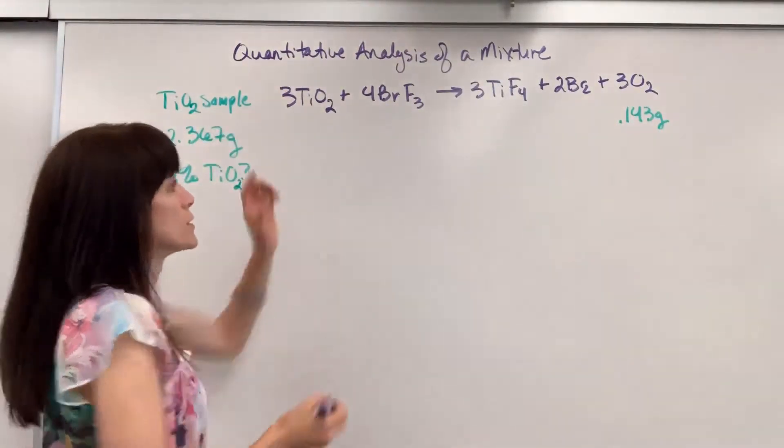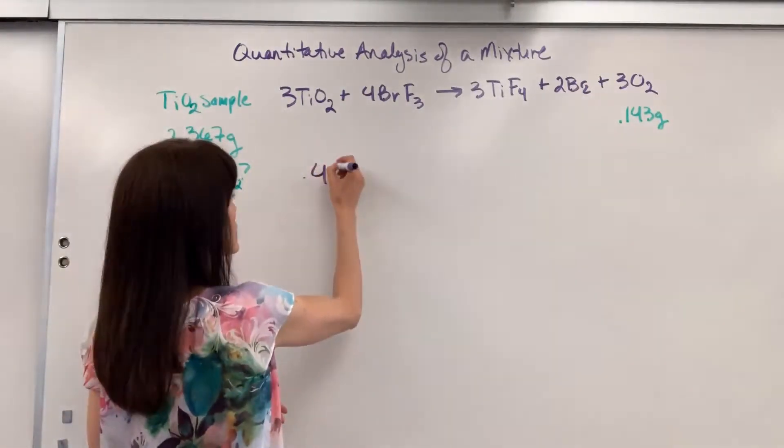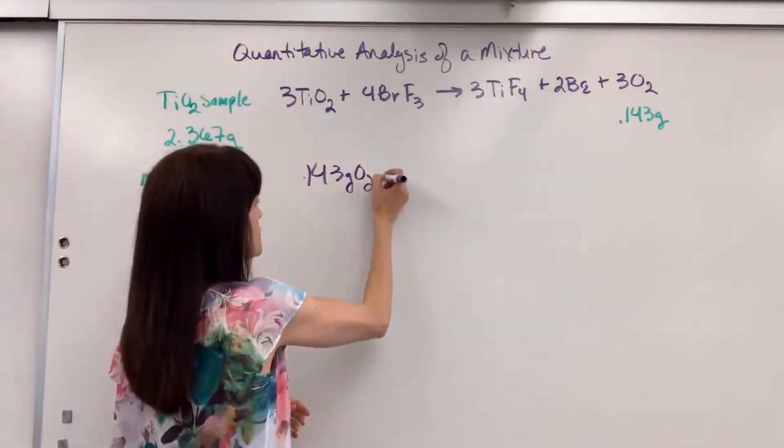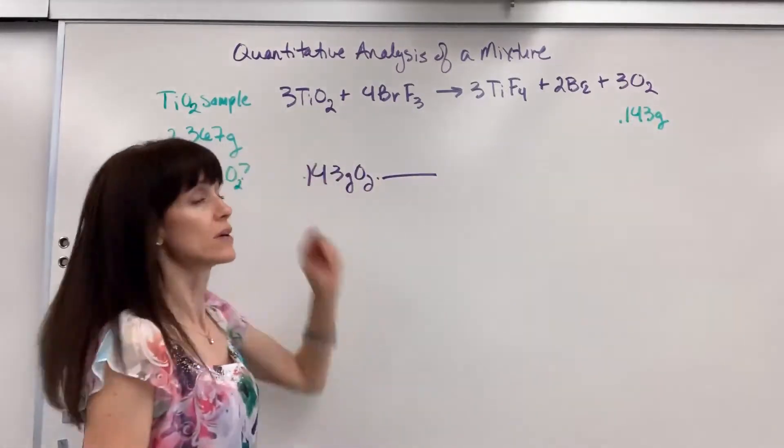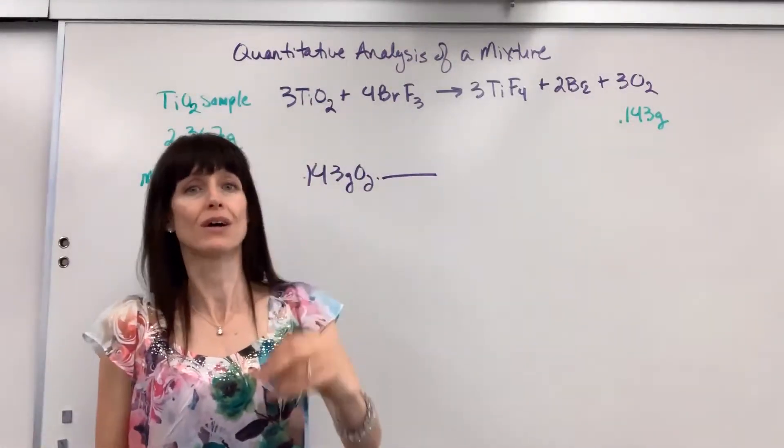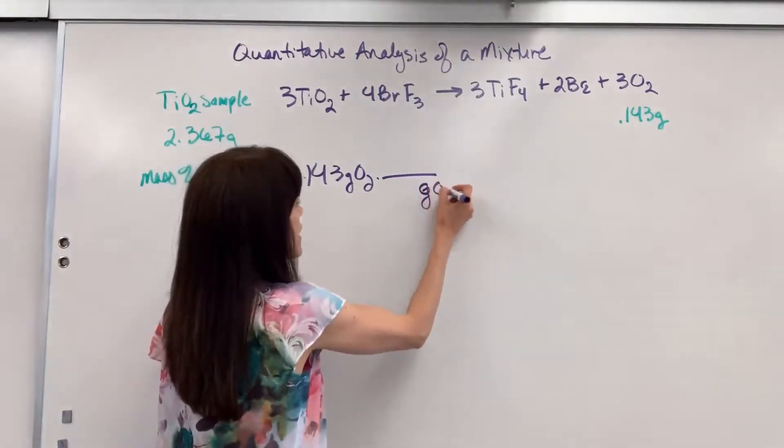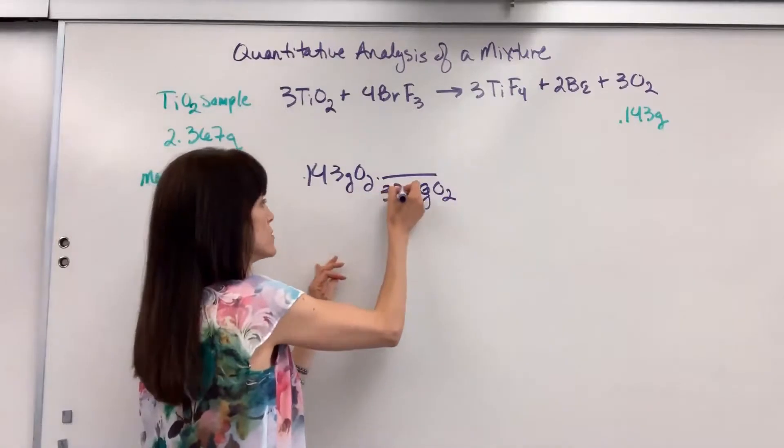Okay. Strike. Here we go. So I'm going to begin with what I'm given. That is the 0.143 grams of oxygen. I've got to walk the bridge from one compound to another using the molar ratio, which means I have to bring this to moles. Put grams of oxygen in the denominator. Two times 16 is 32.